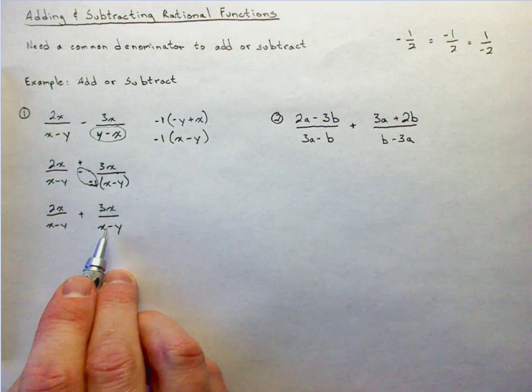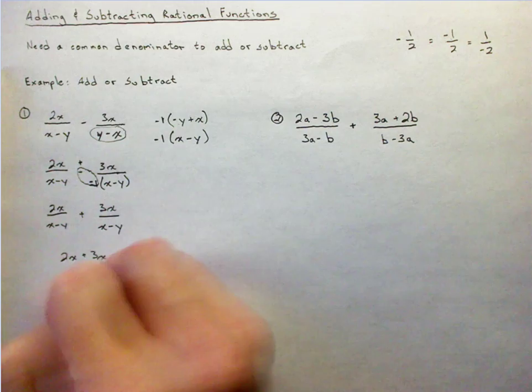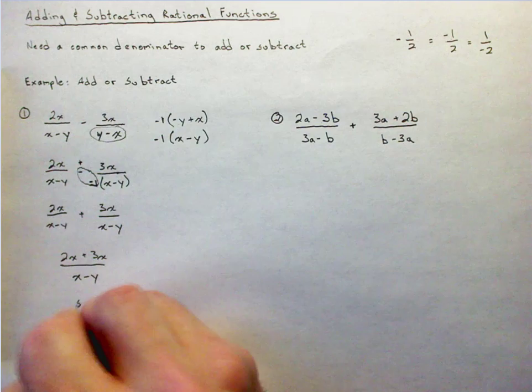And now I have a common denominator. This simply turns into 2x plus 3x all over x minus y, which gives me 5x over x minus y.